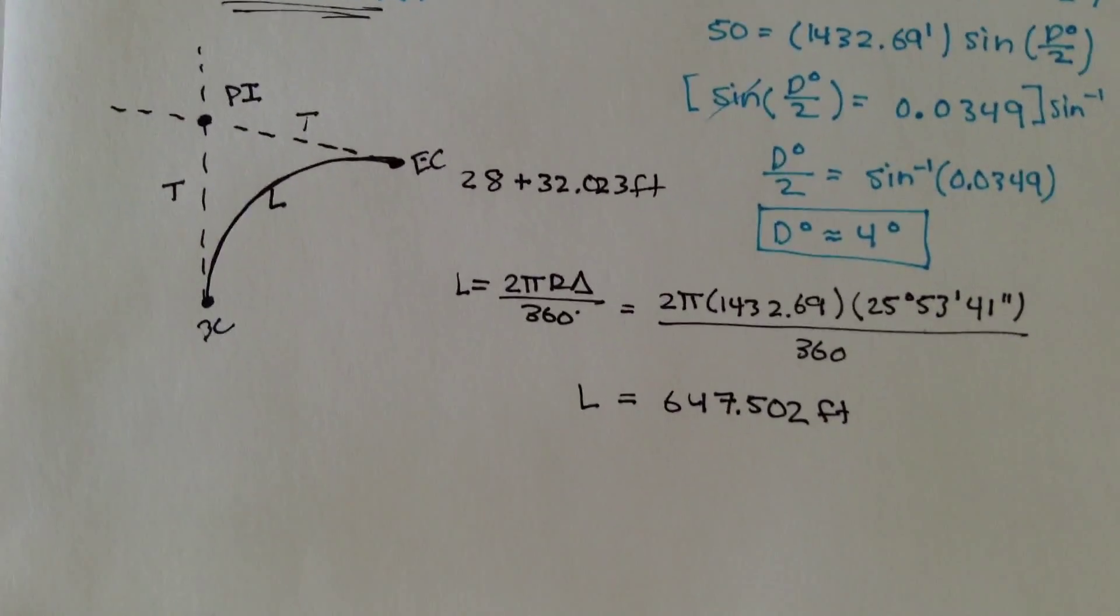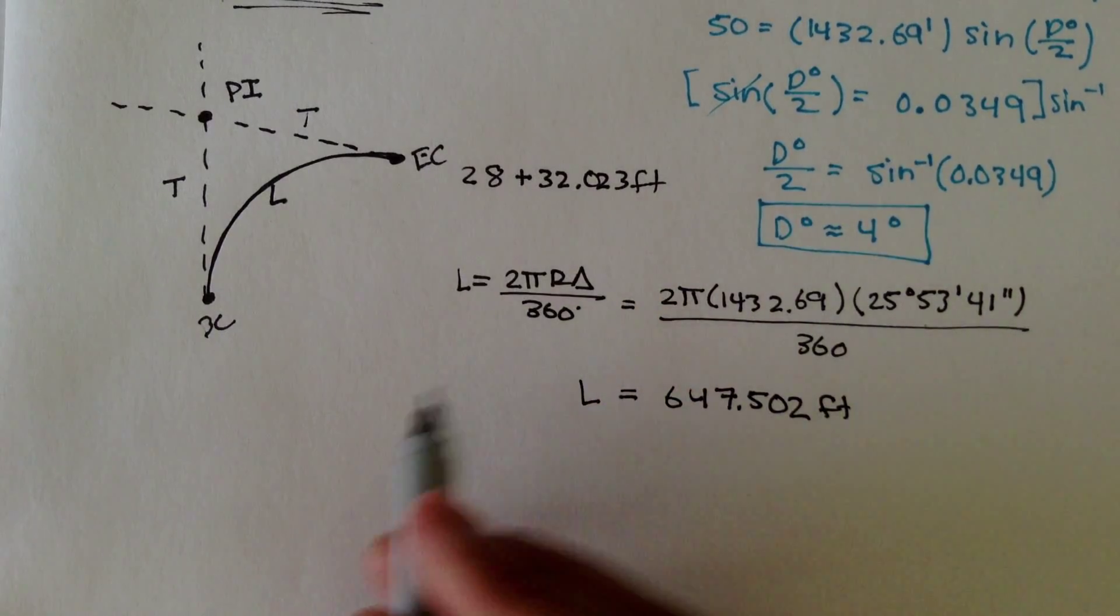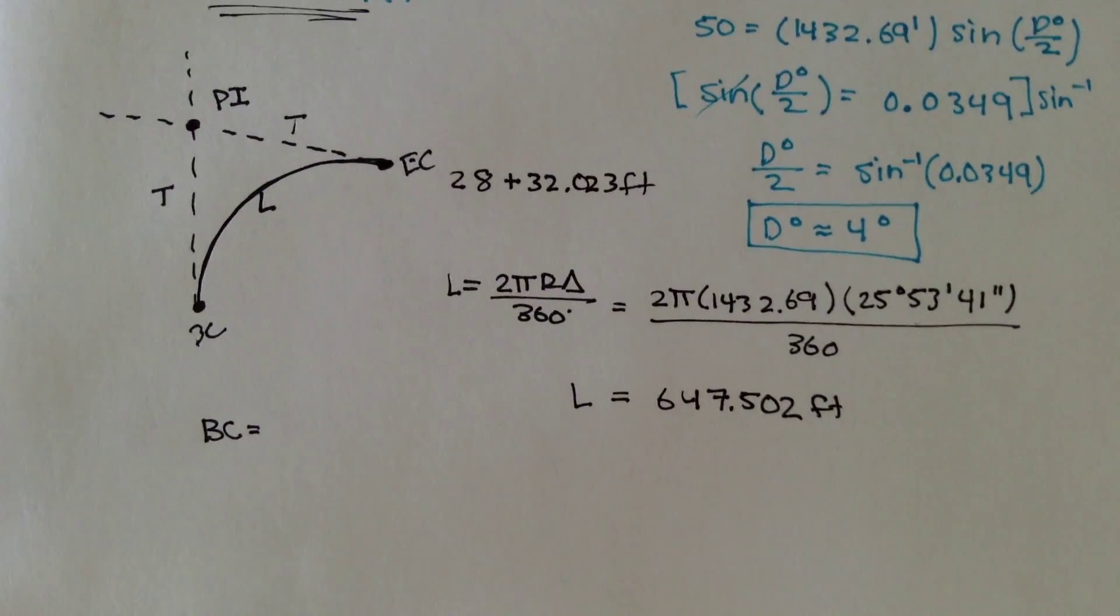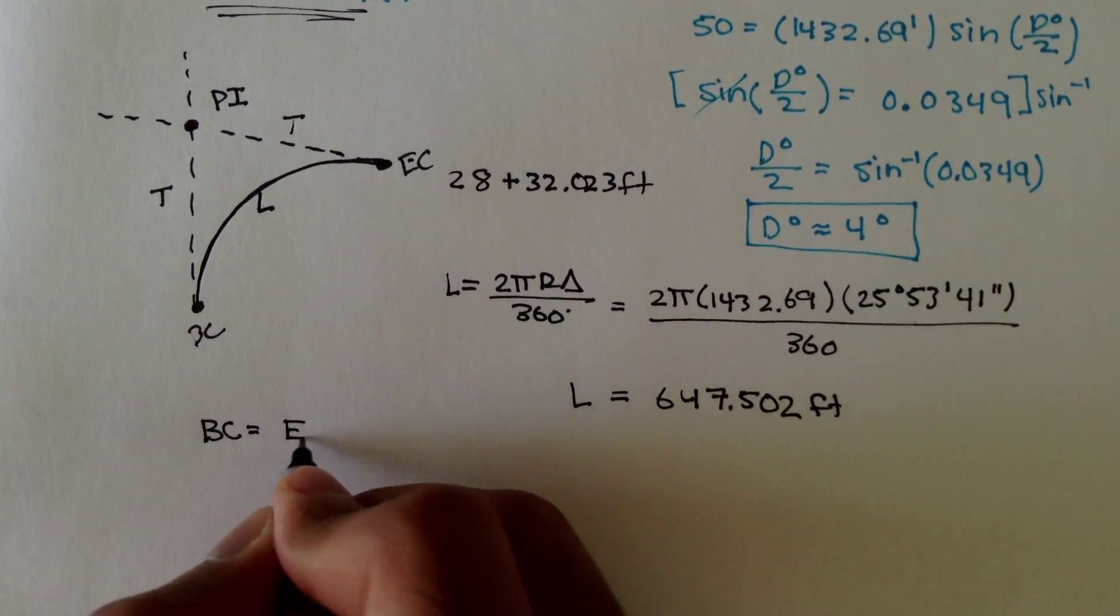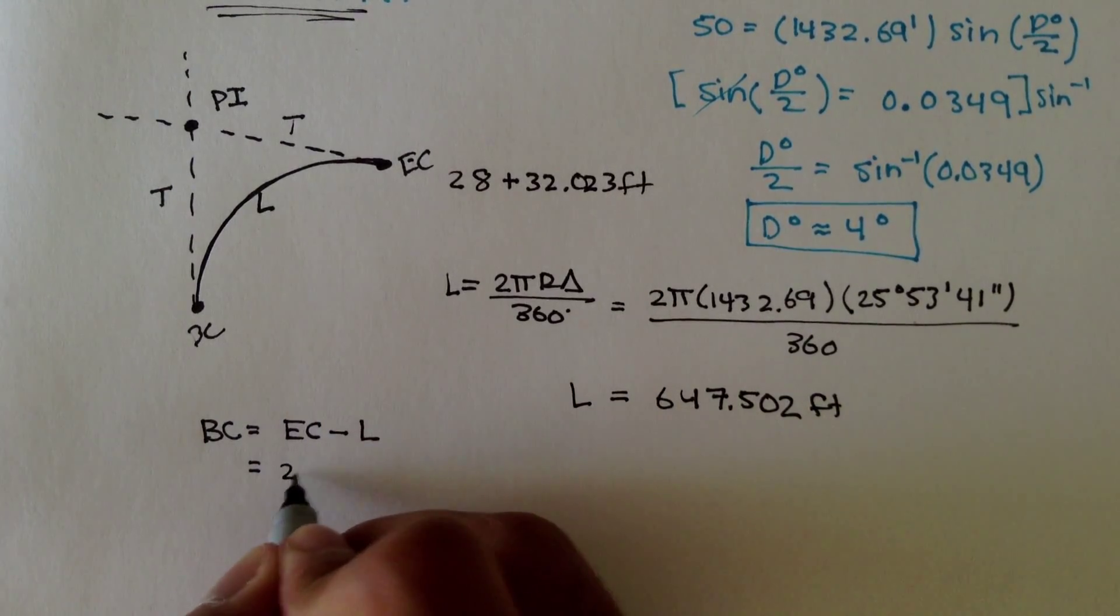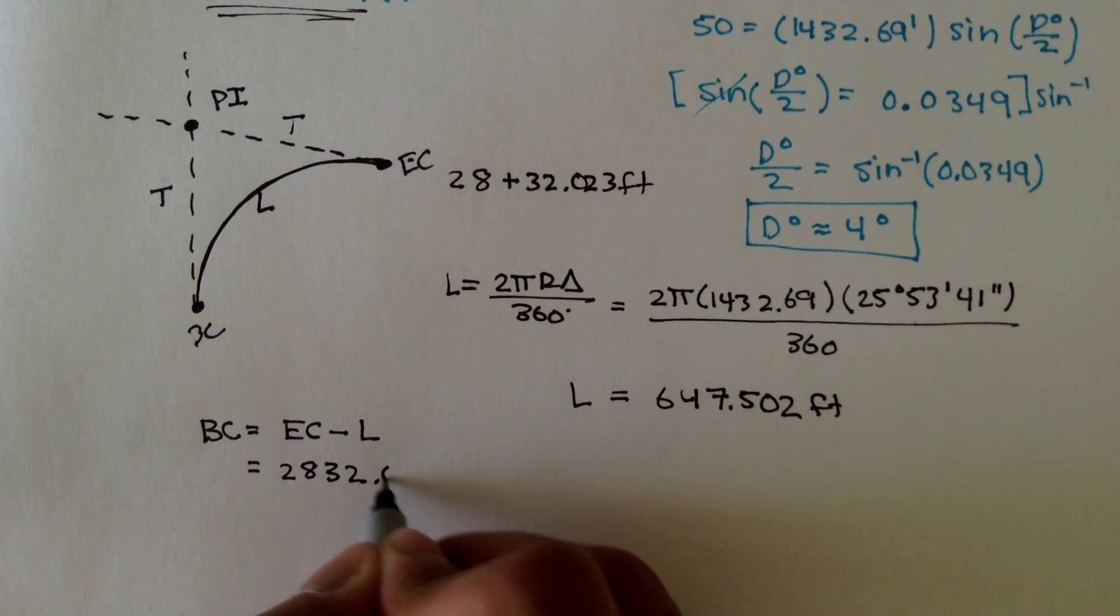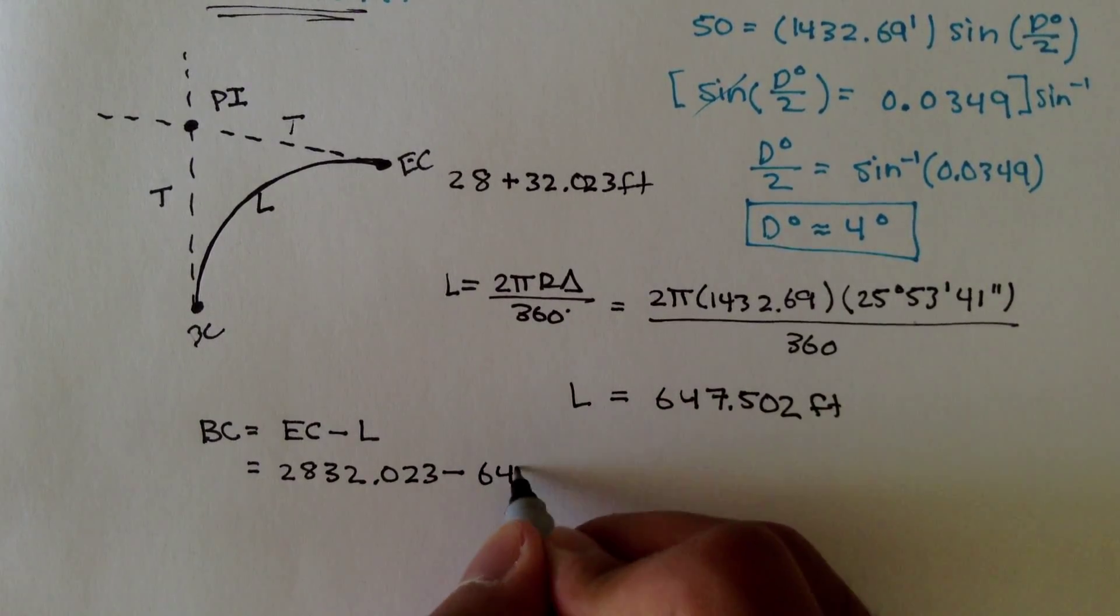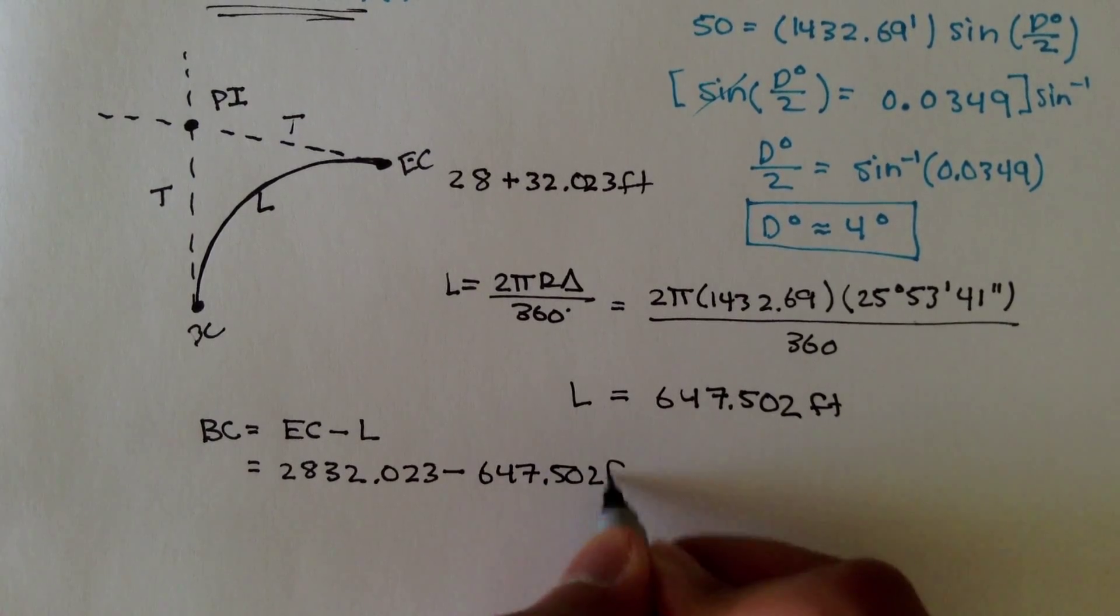To get BC, we need to subtract L from EC. So BC, the station for BC is equal to the end of curve minus L. And the end of curve is 2832.023.